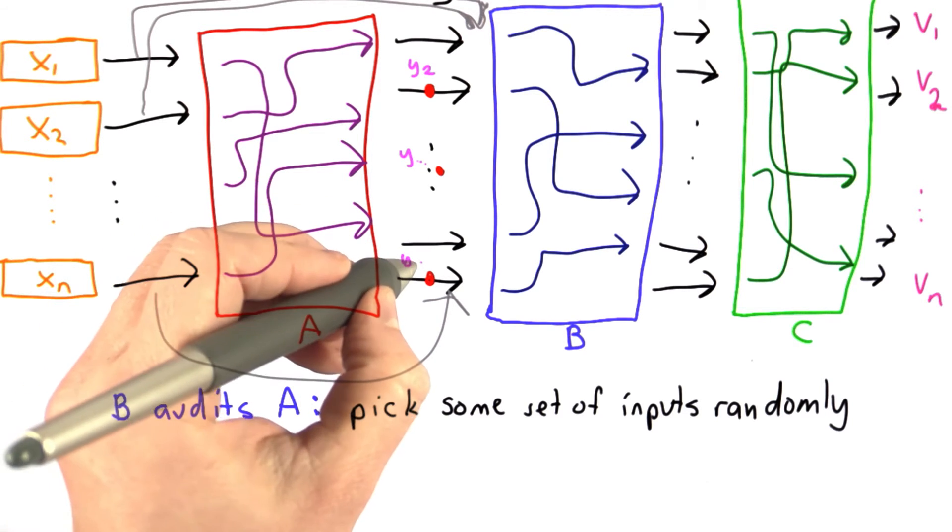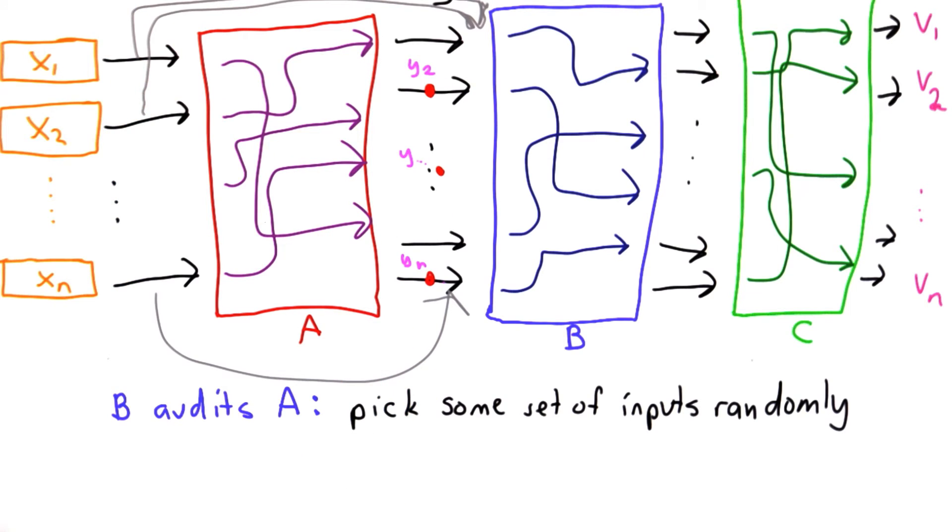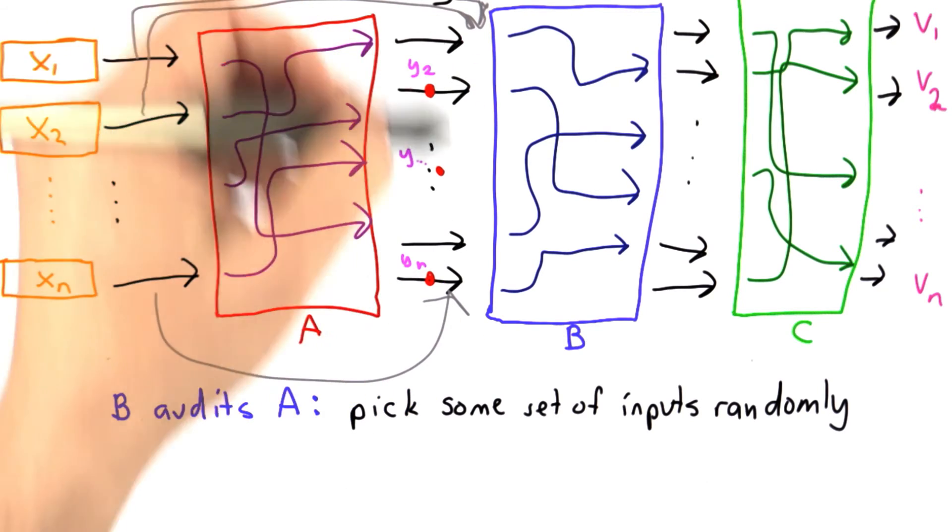And this would be y of n. So for each of the n inputs, Bob picks some number to audit.